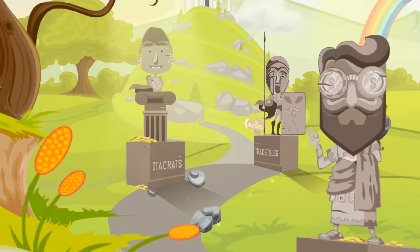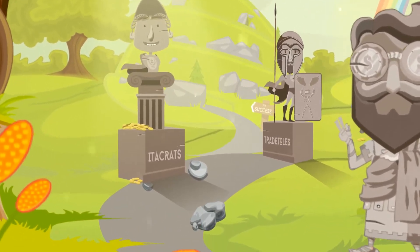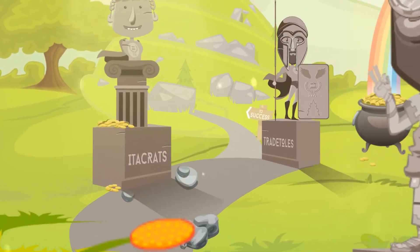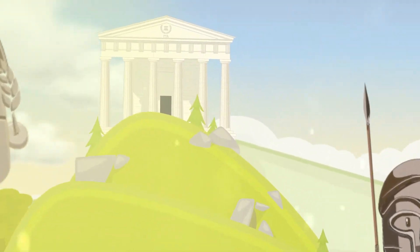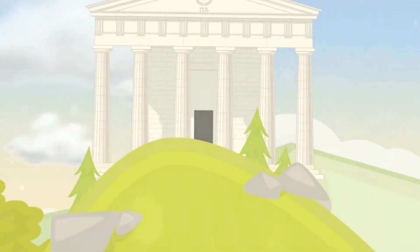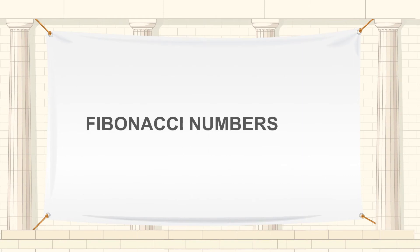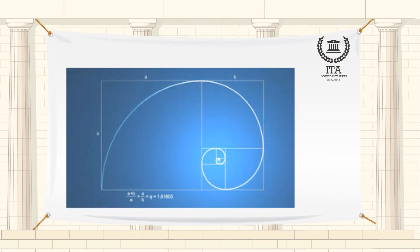Welcome to the Investors Trading Academy talking glossary of financial terms and events. Our word of the day is Fibonacci numbers. Fibonacci numbers are a mathematical sequence of numbers that are sometimes called the golden ratio. Many forex and commodity traders swear by the magic of these numbers and their accuracy in predicting price movement.